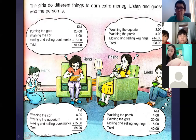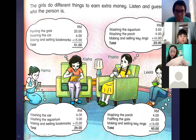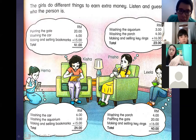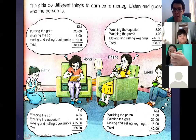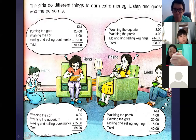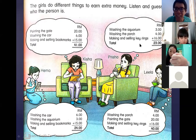The first person: she helps her parents to wash the car and she earns six ringgit. Who is that? Someone guessed correctly — that's Kima! Thank you very much. Next up, another person.